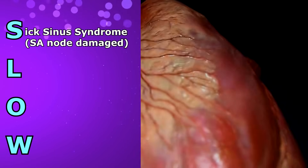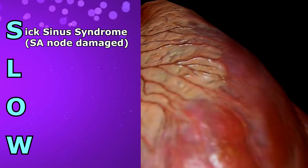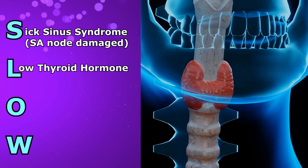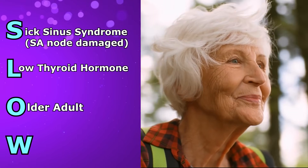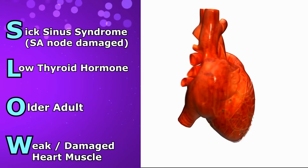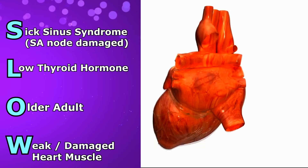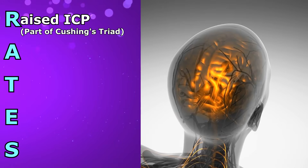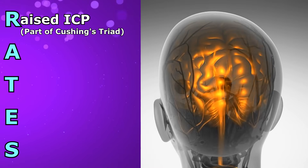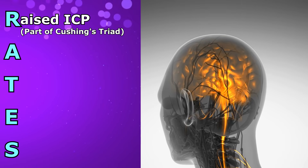S is for sick sinus syndrome — where the SA node is so severely damaged that it doesn't work as the pacemaker anymore, which can lead to other dysrhythmias like sinus arrest or brady-tachy syndrome. L is for low thyroid hormone — an underactive thyroid can lead to this. O is for older adult — as some of us age, so does our SA node, causing a slower heart rate. W is for weak and damaged heart muscle — from ischemia due to a myocardial infarction, or infection and inflammation like pericarditis. R is for raised intracranial pressure — part of Cushing's triad, where raised ICP causes a slow heart rate, irregular respirations, and a widened pulse pressure.